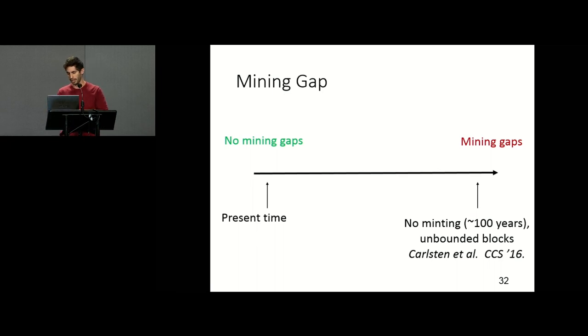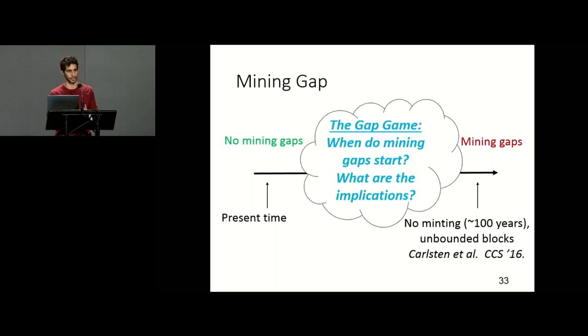This idea is called the mining gaps. So periods of time when you're not mining. It was introduced in a work two years ago by Carlsten et al. Their work focused mainly on Bitcoin mining strategies and they also postulated about this mining gap. They used this model that applies to Bitcoin in 100 years from now when there is no minting at all, which is not the case at the moment. They also had this assumption of unbounded blocks, meaning all pending transactions can be fit into a block, which is not currently part of the spec of Bitcoin. They postulated about having mining gaps. Obviously now we don't have mining gaps. So the question is when do these gaps start? What are their implications? And a little spoiler alert, they are much, much closer than we hope for.